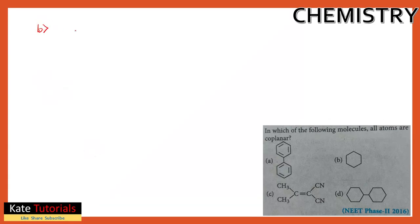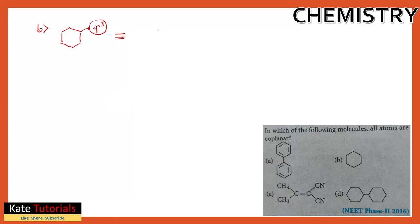Now let's check option B, which is cyclohexane. The hybridization of carbon in cyclohexane is sp3. If we assume the carbons are in one plane, one hydrogen will be above the plane and the other below. So the atoms are not all coplanar — option B is not coplanar.